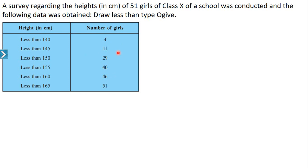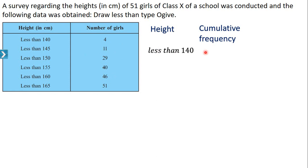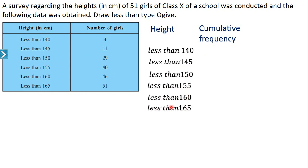Now let us rewrite this table to draw a graph. The first column is height and the next column is cumulative frequency. For less than 140, its corresponding cumulative frequency is 4. Then less than 145, less than 150, less than 155, less than 160, less than 165 — write their corresponding cumulative frequencies: 4, 11, 29, 40, 46, 51. Remember, these are upper limits and the numbers in the next column are cumulative frequencies.